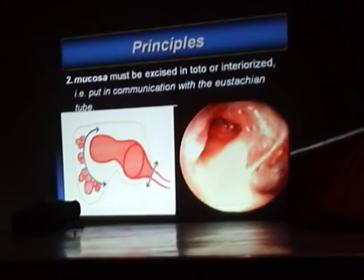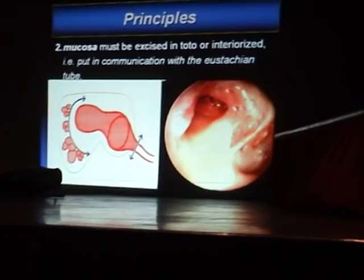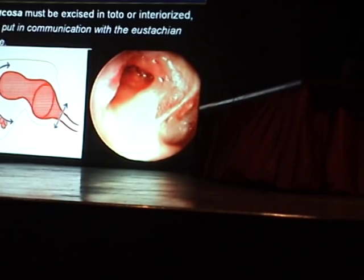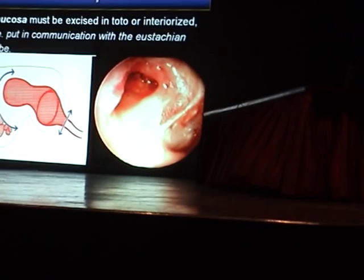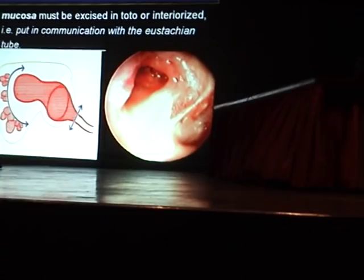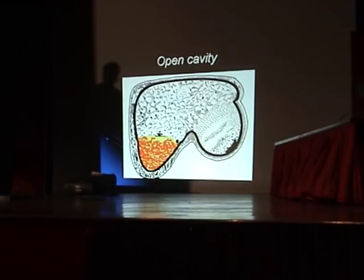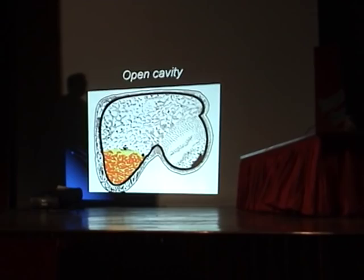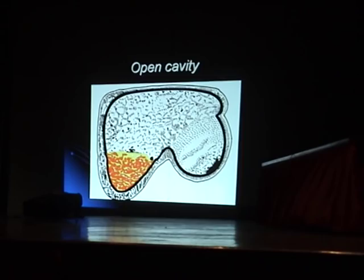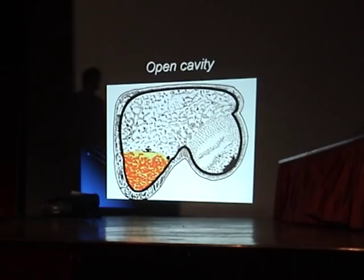Another important principle, not often underlined, is that mucosa also must be excised in toto or interiorized — put into communication with the Eustachian tube. When the Eustachian tube is blocked, there is no aeration to the mucosa. Unaerated mucosa will secrete mucus, producing effusion. The same thing happens with an open cavity in a well-pneumatized mastoid: squamous epithelium lining the cavity prevents mucosal cells from aerating, so unaerated mucosa secretes — it is not infection but unaerated mucosa causing cavity discharge.